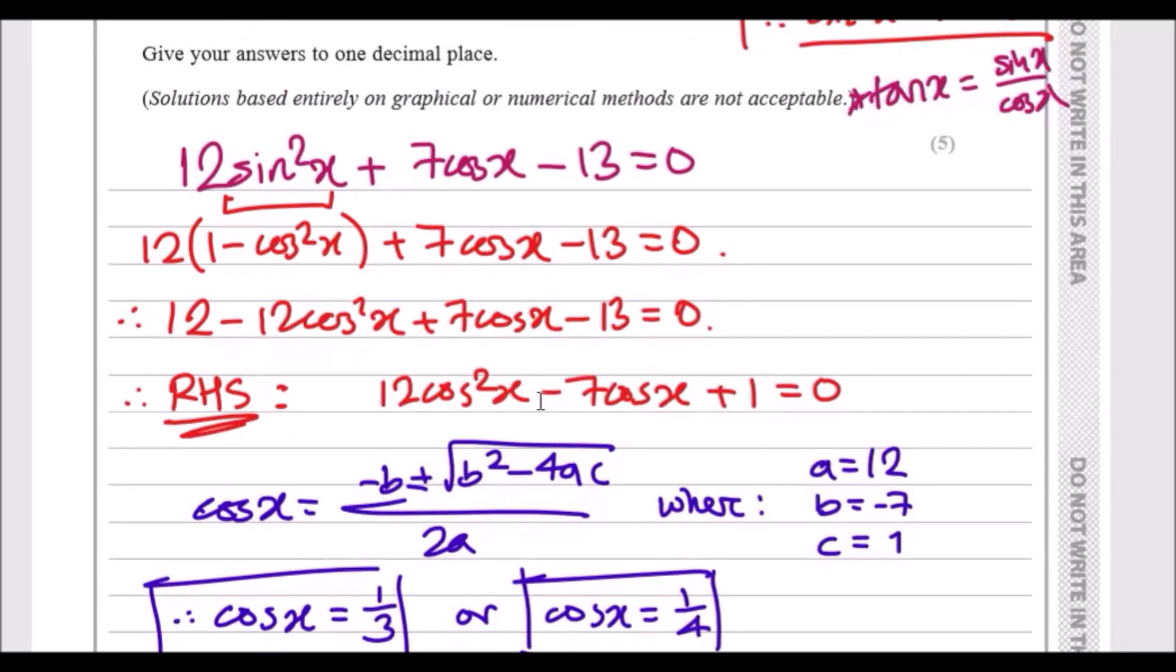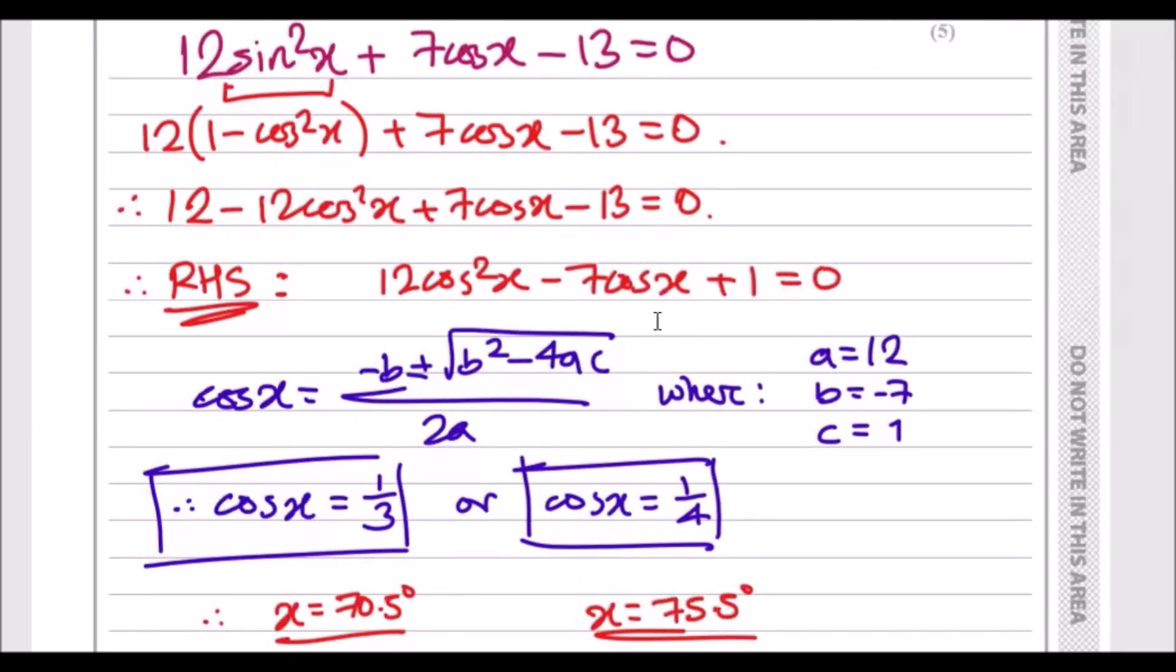To solve this one you could factorize it or use the quadratic formula. I'm going to use the quadratic formula because it's easy. So you use minus b plus minus the square root of b squared minus 4ac over 2a, where a is 12, b is minus 7, and c is plus 1.